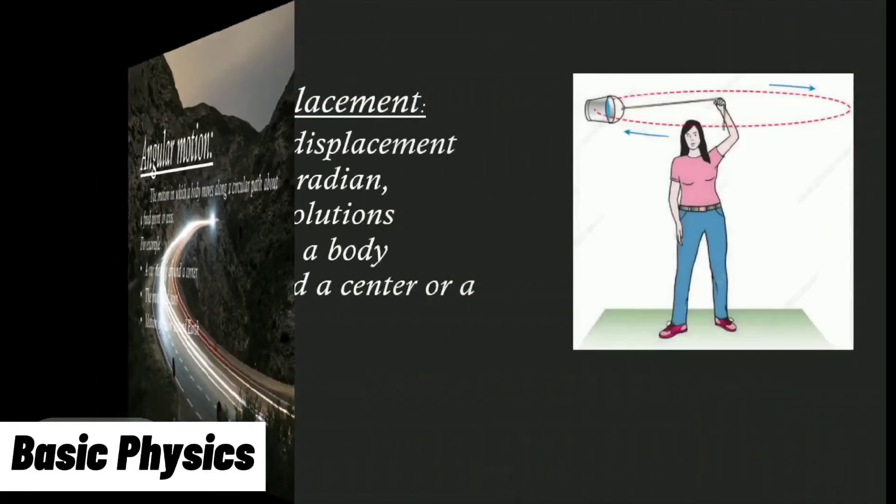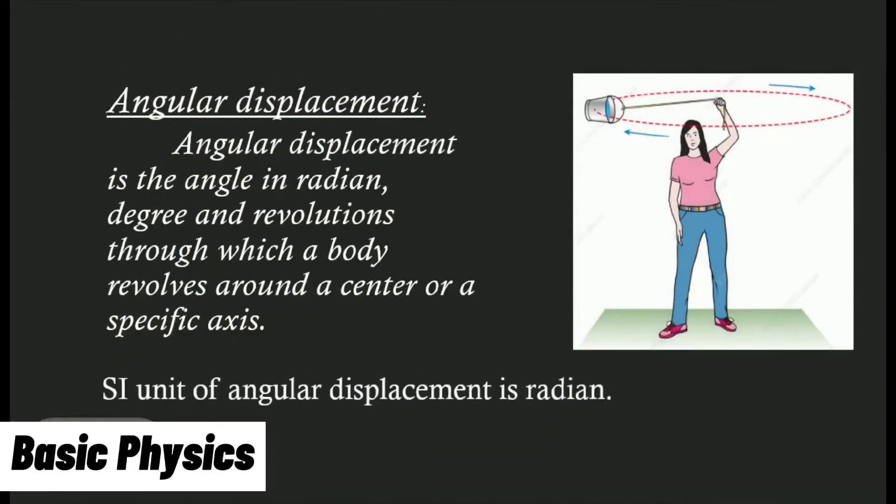Angular displacement: Angular displacement is the angle in radians, degrees, and revolutions through which a body revolves around a center or a specific axis. SI unit of angular displacement is radian.